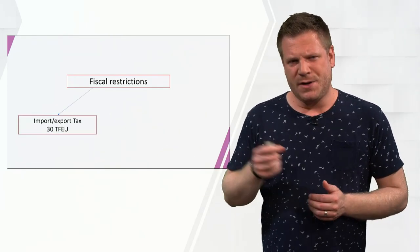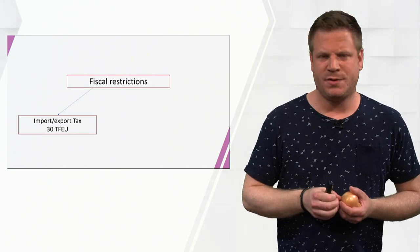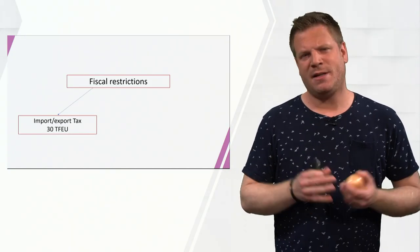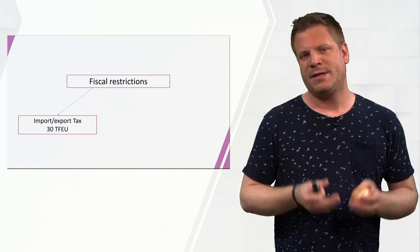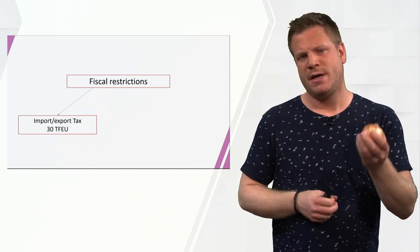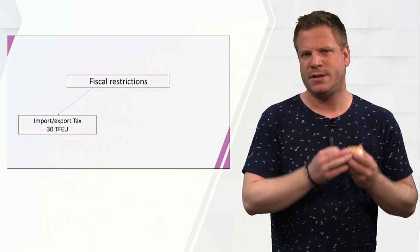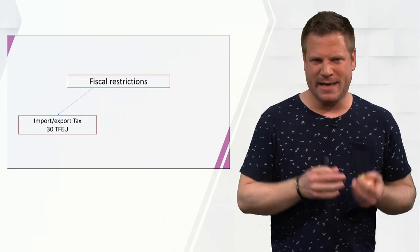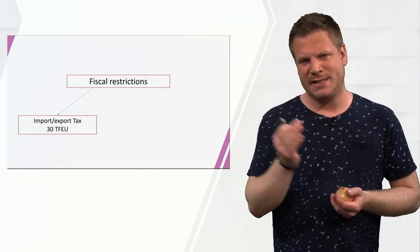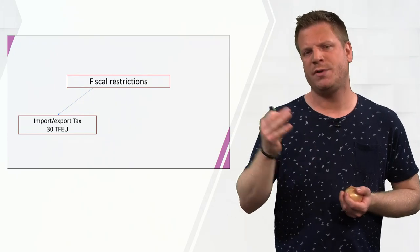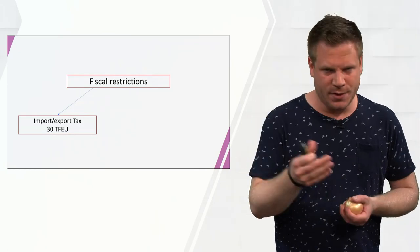The first fiscal restriction that is forbidden is the usage of import and export taxation, forbidden in Article 30 of the Treaty on the Functioning of the European Union. For example, imagine Germany wants to sell onions in the Dutch market, and the Dutch uphold a custom duty on onions. The Germans crossing the border would have to pay an additional sum of money, while Dutch producers do not. This situation favours Dutch producers over German producers and is banned under Article 30 TFEU.